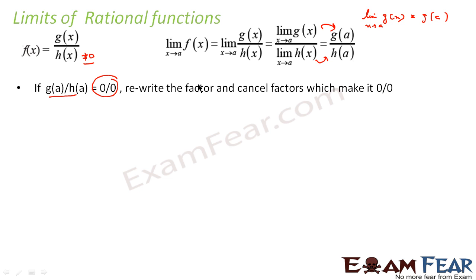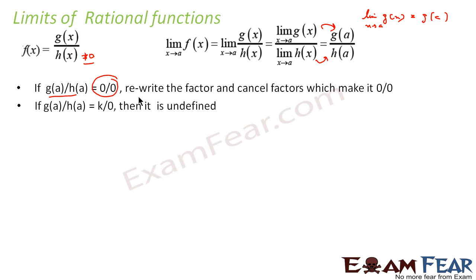If it is a 0 by 0 form, then we can rewrite and cancel the factor which makes it 0 by 0. If the value comes out to be k by 0 form, then that means it is undefined.